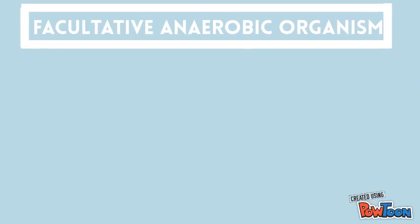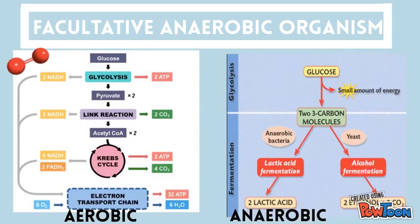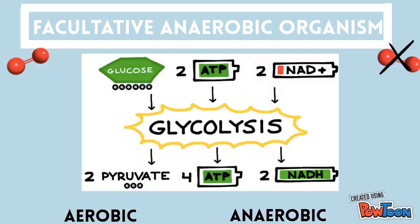S. thermophilis is a facultative anaerobic organism. This means that they can make ATP by aerobic respiration if oxygen is present, but are also capable of switching to fermentation or anaerobic respiration if oxygen is absent. Even though both of these processes begin with glycolysis, both later differ in process.